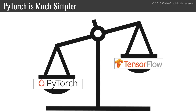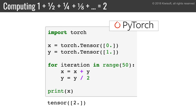People who prefer PyTorch usually argue that it's much simpler than TensorFlow, and until recently this was true. For example, this is how you can use PyTorch to compute 1 plus 1 half plus 1 quarter plus 1 eighth and so on, which converges to two. It's pretty straightforward code — you just execute the computations you need very naturally.